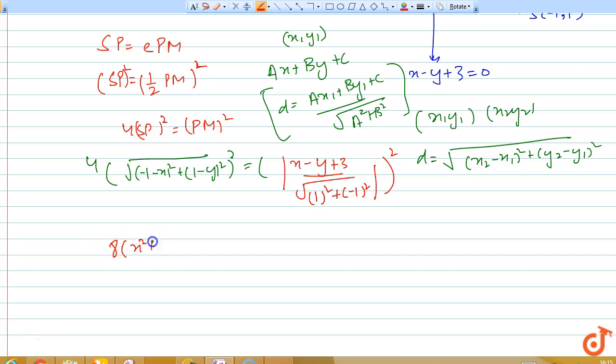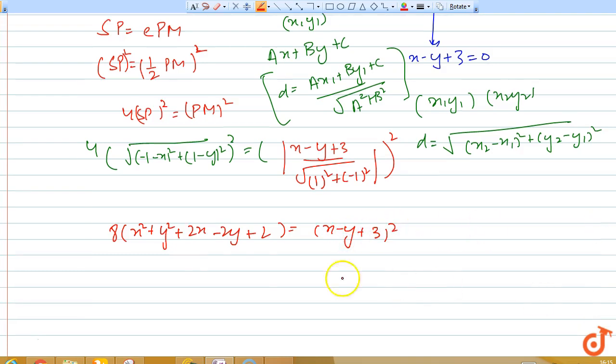So we get 4[x² + 1 + 2x + y² + 1 - 2y] = (x - y + 3)² / 2, which simplifies to 8(x² + y² + 2x - 2y + 2) = (x - y + 3)².